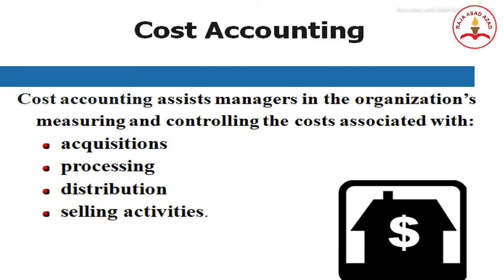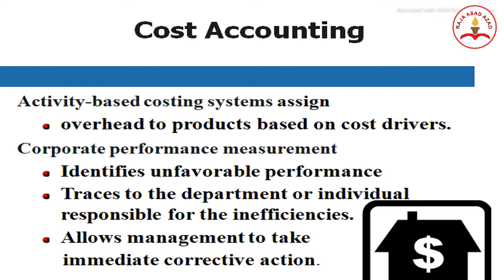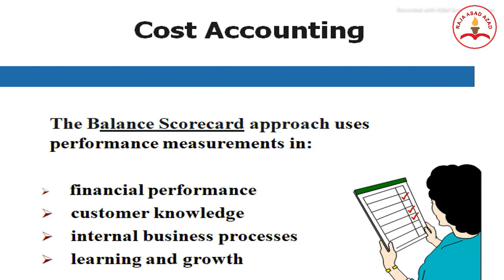In cost accounting, it assists managers in measuring and controlling the costs associated with acquisition, processing, distribution, and selling activities. Activity-based costing (ABC) assigns overhead to products based on cost drivers. Corporate performance measurement identifies unfavorable performance, traces it to the department or individual responsible for inefficiencies, and allows management to take immediate corrective action. The balanced scorecard approach uses performance management across financial performance, customer knowledge, internal business processes, and learning and growth.